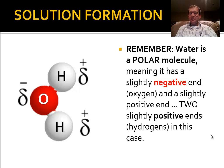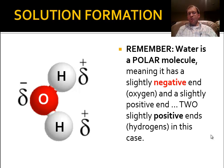A way to think about it with water, our most common solvent in chemistry: water is a very polar molecule, so it has a positive end — the two hydrogen atoms — and a negative end, the oxygen end of the molecule. That has to do with the fact that oxygen has a fairly large electronegativity.